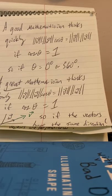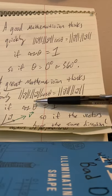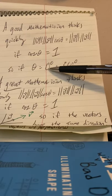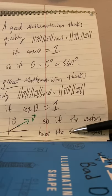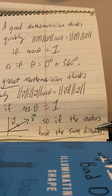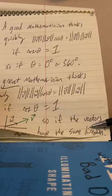But a great mathematician thinks a little slower, more carefully, and thinks about the consequences. What does it mean for cosine of the angle between them to be one? Well, if theta has to be zero, that means there is no angle between the vectors. And if there's no angle between the vectors, then the two vectors are going in the same direction. Or they are what we say parallel.